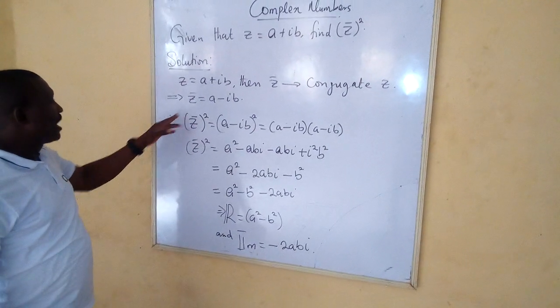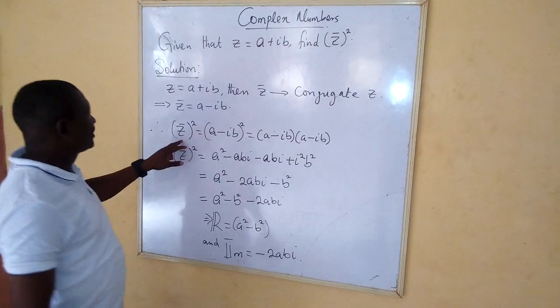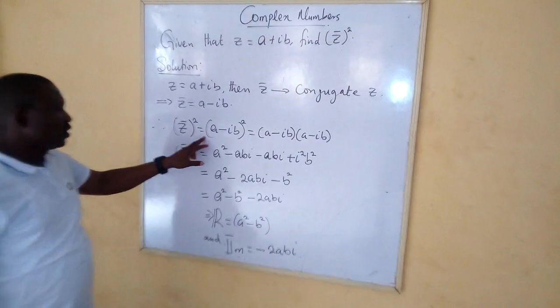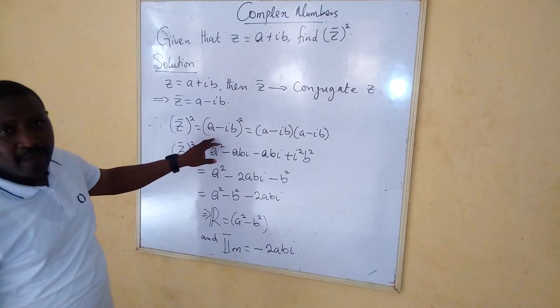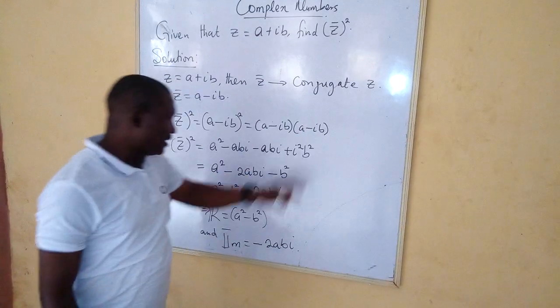And now we come to have z-bar to be a minus ib such that the square of z-bar is equal to the square of a minus ib which gives the following expression.